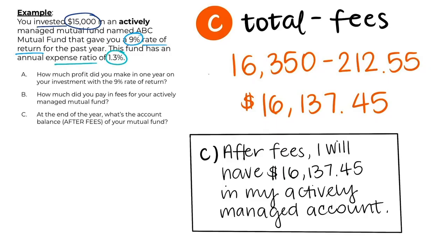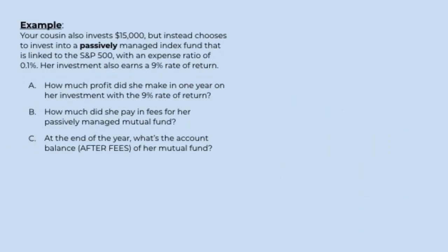Now it's your turn. Your cousin invests the same amount and gets the same rate of return, but instead chooses to invest in a passively managed fund that is linked to the S&P 500. Her expense ratio is only 0.1%. Go ahead and practice calculating your cousin's profit, fees, and account balance after fees.